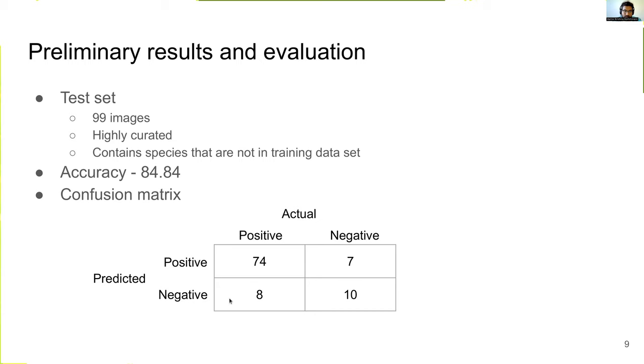And from the confusion matrix, we can understand that the model is slightly tilted towards positively labeled images, because 8 out of 82 positively labeled images are predicted as negative, but 7 out of 17 negatively labeled images are predicted as positive, so that means more than 40%. And we are working with more prompts and approaches to get a better trade-off between false positives and false negatives.